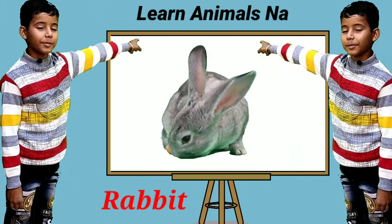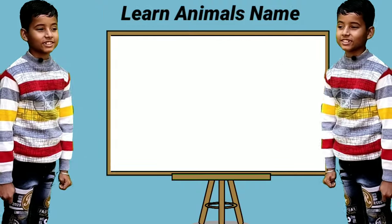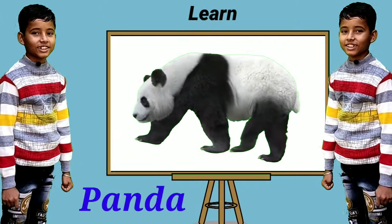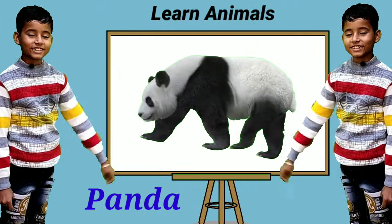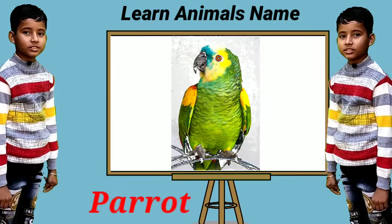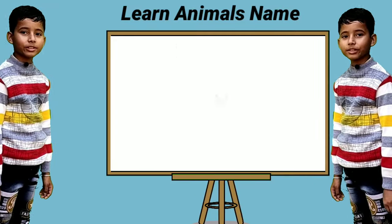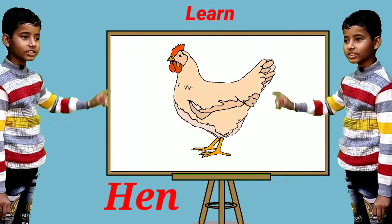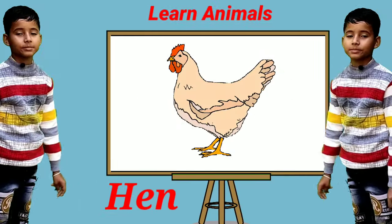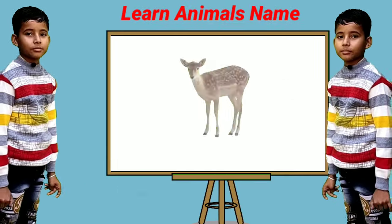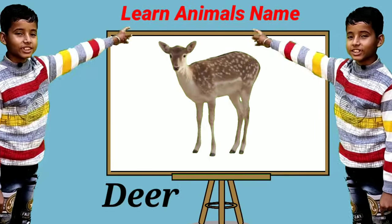This is a rabbit. This is a panda. This is a parrot. This is a hen. This is a deer.